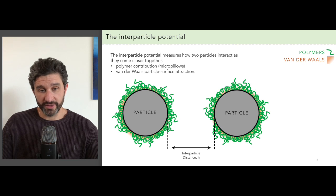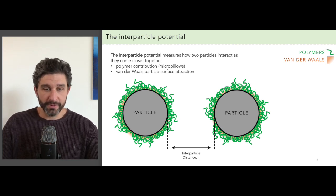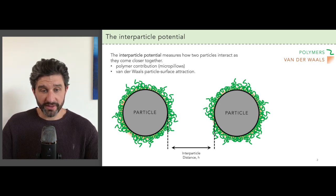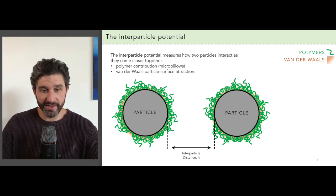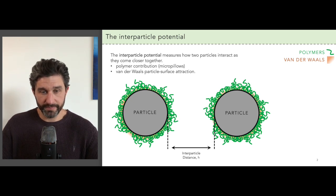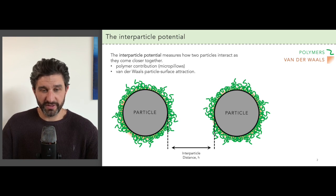The first is the van der Waals interaction. As we discussed in an earlier episode, this is attractive and short-ranged — it's what causes the particles to cluster and potentially flocculate when they're not coated with polymers. The second contribution is from the polymers adsorbed to the particle surfaces.